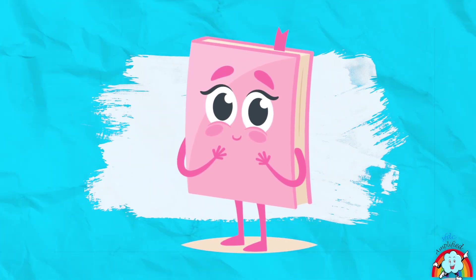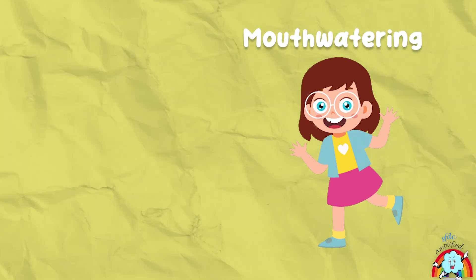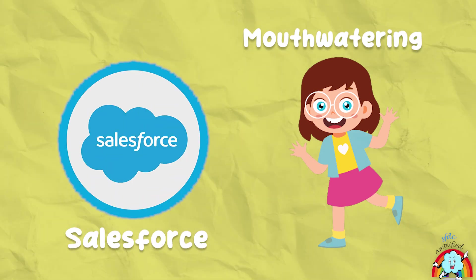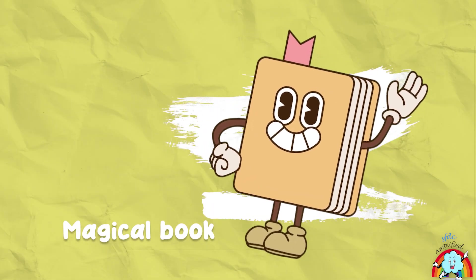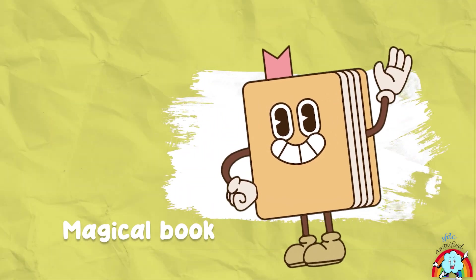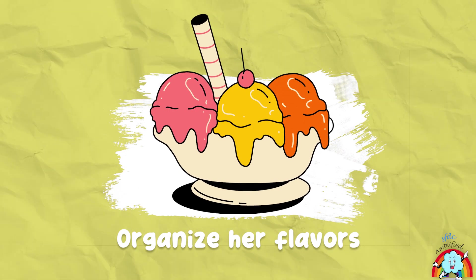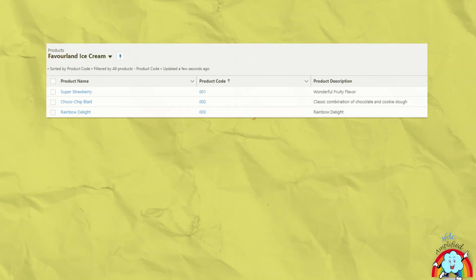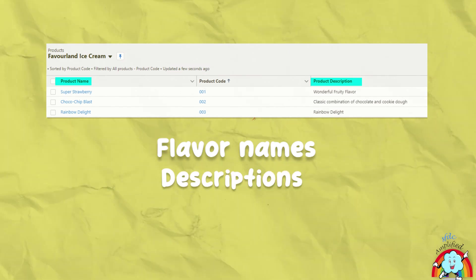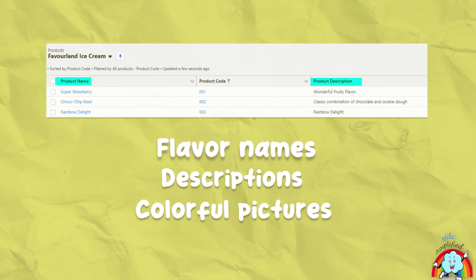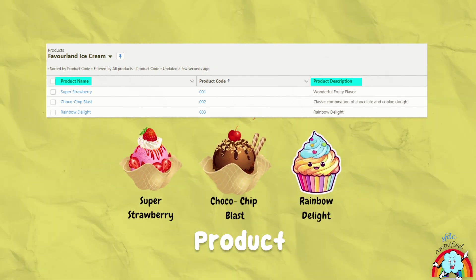To keep track of all her mouth-watering ice creams, Ima uses Salesforce. You can think of it as a magical book that helps her organize her flavors in the most amazing way. With Salesforce, she jots down the flavor names, description, and even can add colorful pictures in a Salesforce object — or think of it as a table — called product.